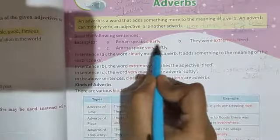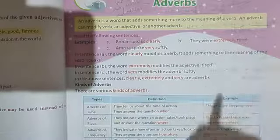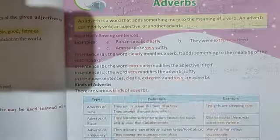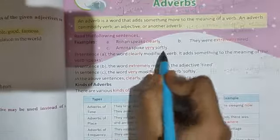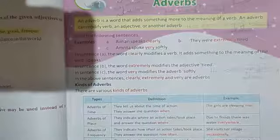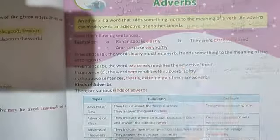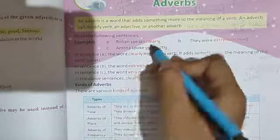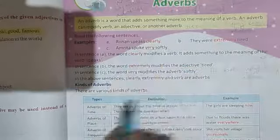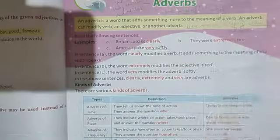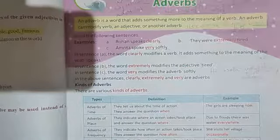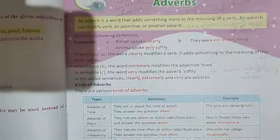See, Rohan speaks clearly, extremely tired, very softly. Very, softly, Amrita spoke softly. Softly is an adverb. Using very is one more adverb. Clearly, one more adverb. Clearly is your simple adverb. It is modifying verb. Extremely modifying adjectives.